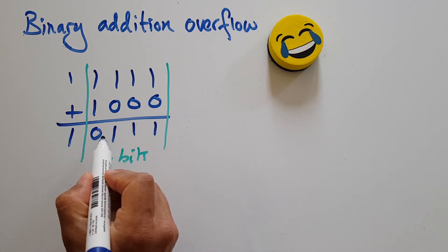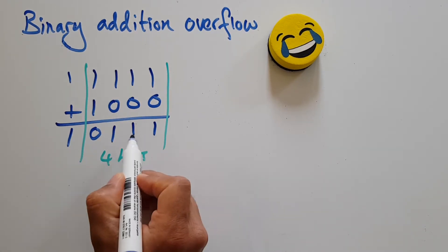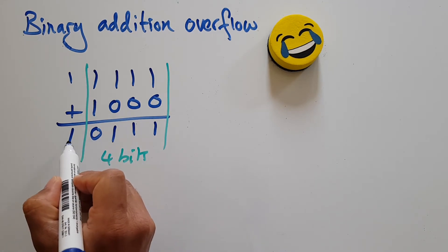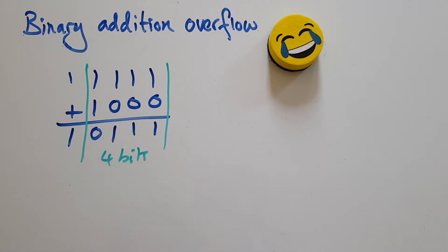I only allocated four bits for the answer, but actually the answer is one, two, three, four, five bits. That is an overflow error.